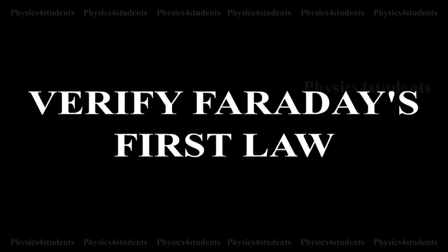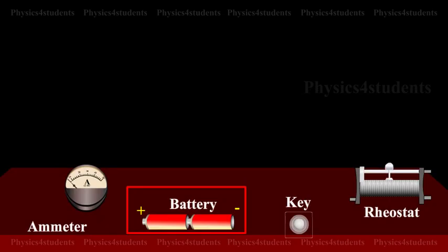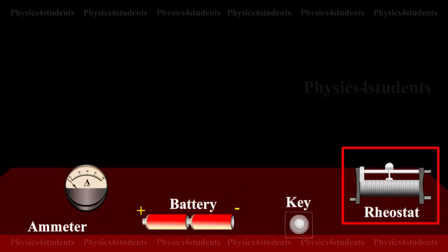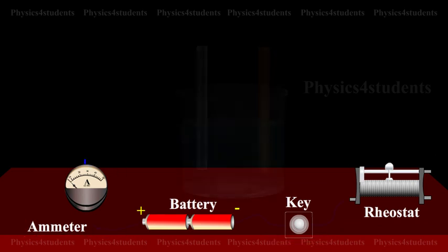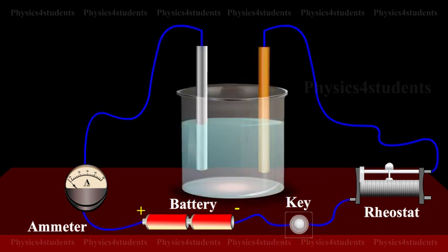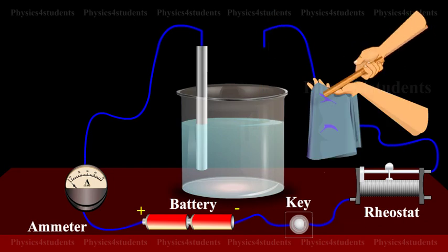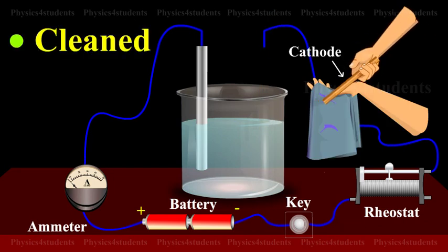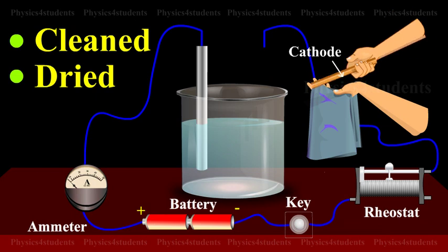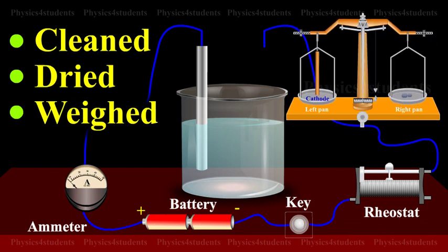Verification of Faraday's First Law. A battery, a rheostat, key and an ammeter are connected in series to an electrolytic set. The cathode is cleaned, dried, weighed and then inserted in the cell.